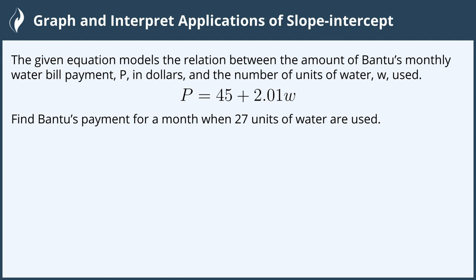So the first thing we need to see is that W is for units of water, and that's what we were given, 27 units of water. We're looking for Bantu's payment, or his bill for a month, and the payment is P. So we're going to find P after we substitute 27 in for W.